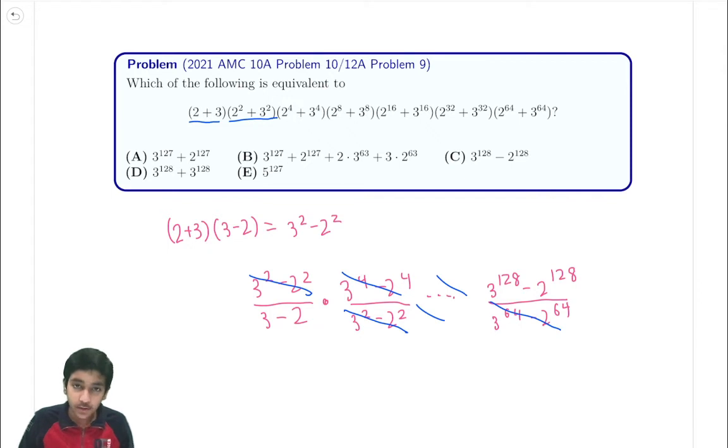And this is just equal to, since 3 minus 2 is equal to 1, it's equal to just 3 to the 128 minus 2 to the 128, which is C. So C is the answer for this problem.